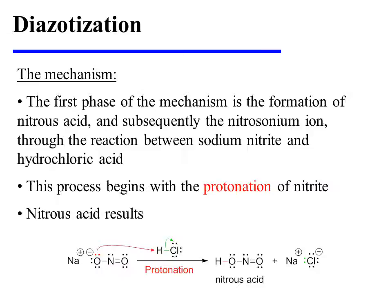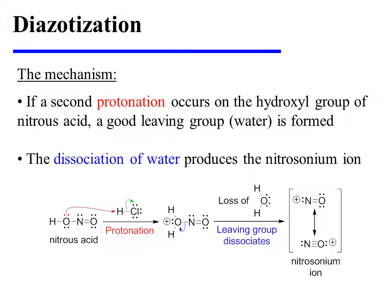The first phase of the mechanism is the formation of nitrous acid, and subsequently the nitrosonium ion, through the reaction between sodium nitrite and hydrochloric acid. The process begins with the protonation of nitrite, and nitrous acid results. If a second protonation occurs on the hydroxyl group of nitrous acid, a good leaving group is formed. The dissociation of water produces the nitrosonium ion.